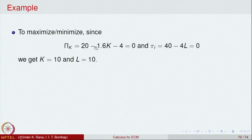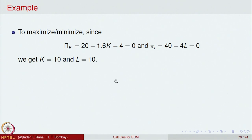Setting the partial derivatives to zero gives us K = 10 and L = 10. So when the input for capital is 10 and the input for labour is 10, the profit function is possibly at a maximum.